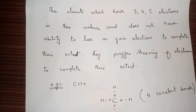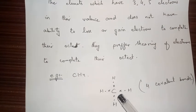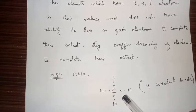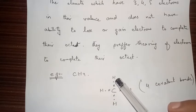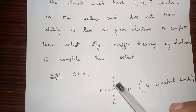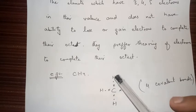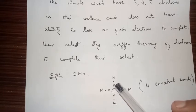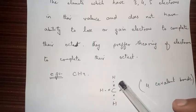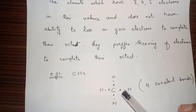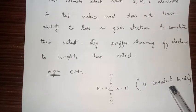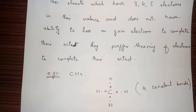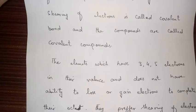For example, covalent bonds in CH4, the methane molecule. Hydrogen has to complete its duplet and carbon has to complete its octet. Carbon has four electrons in its valence shell and hydrogen has one electron. Hydrogen shares its one electron with carbon to complete its duplet, and carbon shares its four electrons with four hydrogen atoms to complete its octet, forming four covalent bonds between carbon and hydrogen to form methane.